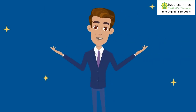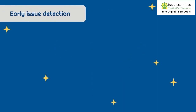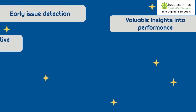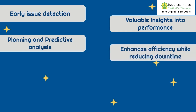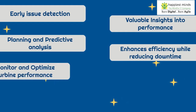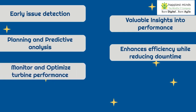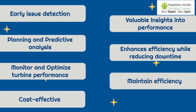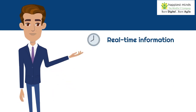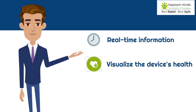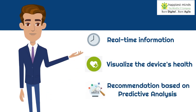Digital twins have become essential in efficiently managing industry operations. These digital replicas enable early issue detection, offer valuable insights into performance, and provide crucial data for planning and predictive analysis by integrating data and artificial intelligence. This optimization enhances efficiency while reducing downtime, with digital twins continuously monitoring and optimizing turbine performance. By incorporating digital twins, wind farm operators can maintain efficiency and cost-effectiveness. Dashboards like the one at Happiest Minds provide real-time information on status and alerts, allowing users to visualize the device's health and receive recommendations based on predictive analytics.